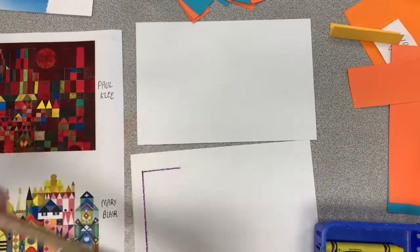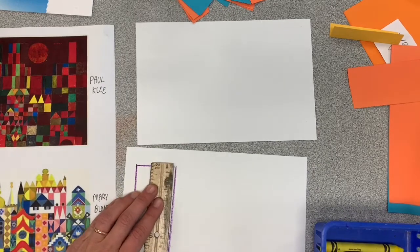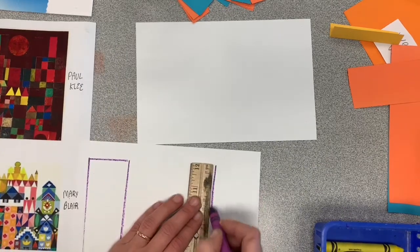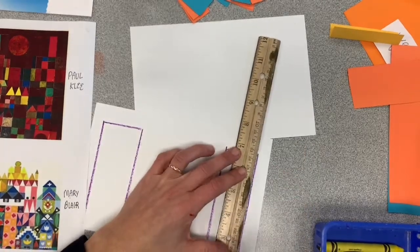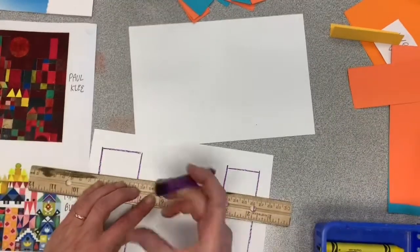I'm going to draw a tower on both sides so that it's a little bit symmetrical, which means the same on both sides, and then a big shape in the middle. You can make your building however you want it to be.